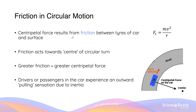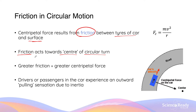When circular motion is taking place on a horizontal surface, the centripetal force results from the frictional force between the mass and the surface. In the common example of a car going around a circular turn or bend, the friction present between the tyres of the car and the surface is what provides the circular motion and the centripetal force. The frictional force acts towards the centre of the circle as it is the centripetal force.